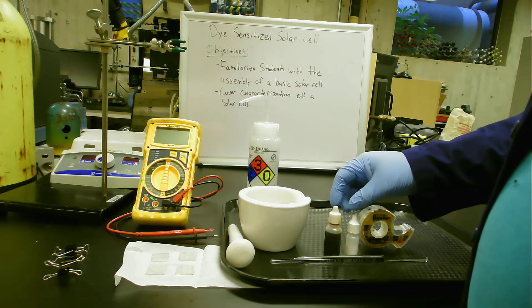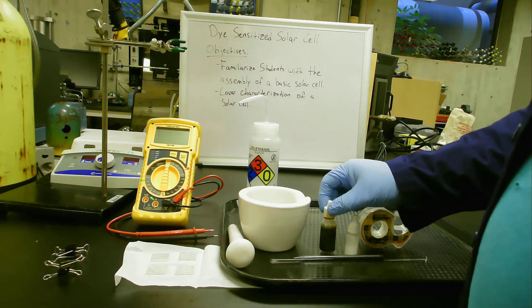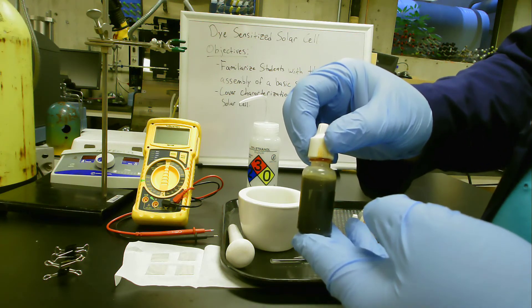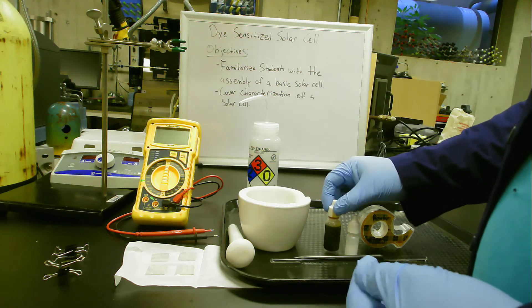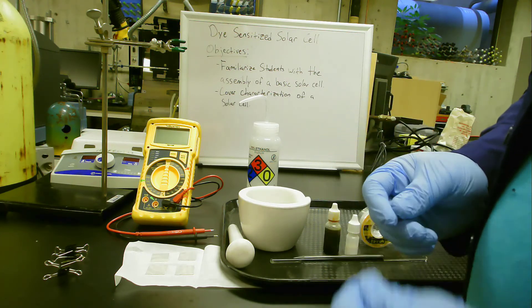We have our electrolyte, which is the iodide solution. This stuff is not particularly harmful, although it does stain everything. You have to be careful about getting it on your hands. This is where gloves are very handy.